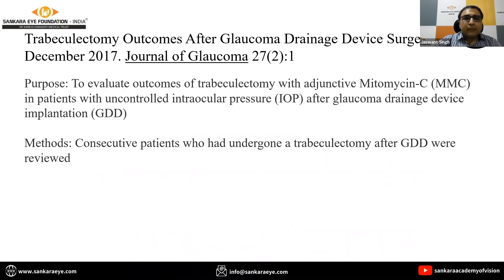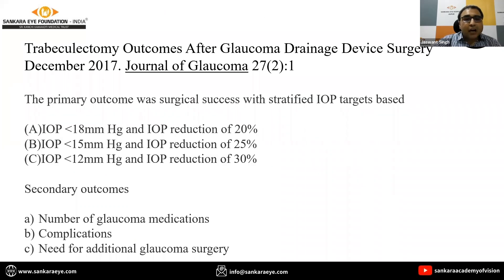Studies have also examined trabeculectomy outcomes after glaucoma drainage device surgery in refractory glaucoma. One study evaluated trabeculectomy with adjunctive mitomycin C in patients with uncontrolled IOP after GDD implantation. The primary outcome was surgical success with stratified IOP targets: IOP less than 18 mmHg with at least 20% IOP reduction from baseline.